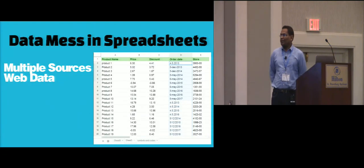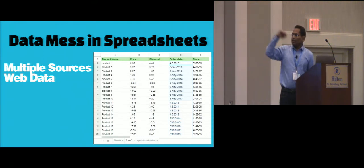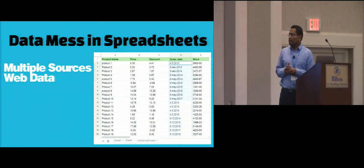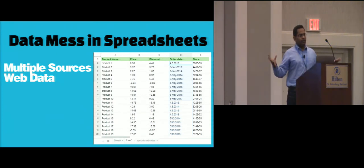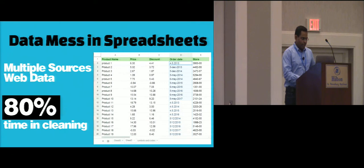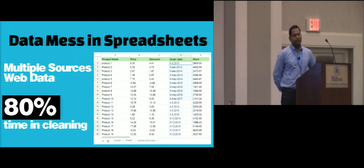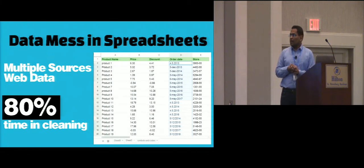As you all know, there's too much data in this world right now, and a lot of that data actually lies in spreadsheets. This is one small example where you can see this spreadsheet has dates in many different formats. This big data mess inside spreadsheets is typically because data comes from multiple sources in multiple different formats, and a lot of data is coming from the web with many different attributes. Several studies have shown that about 80% of data scientists' time is spent just cleaning up this data, and the remaining 20% is actually doing useful analysis on top of it.